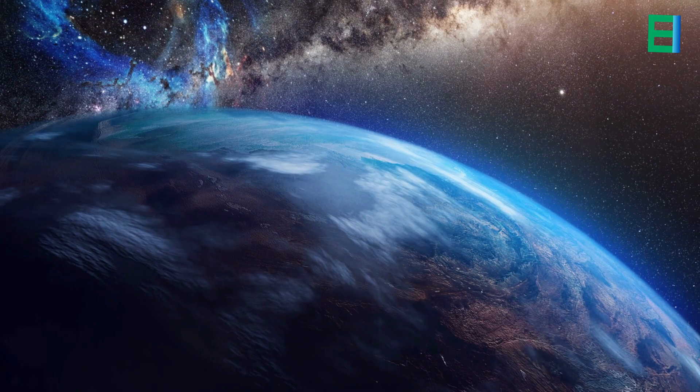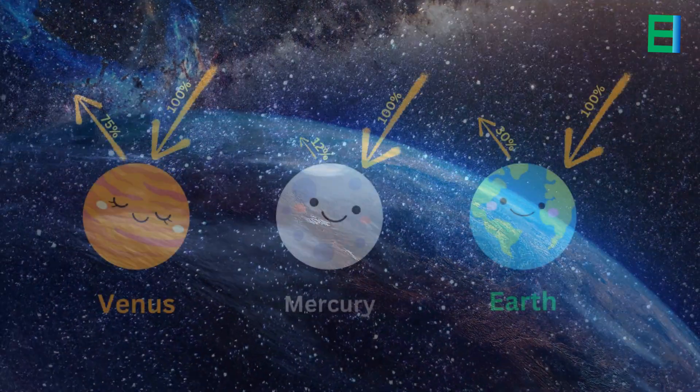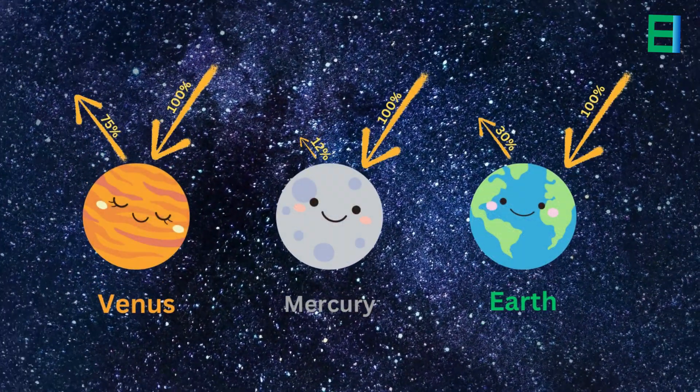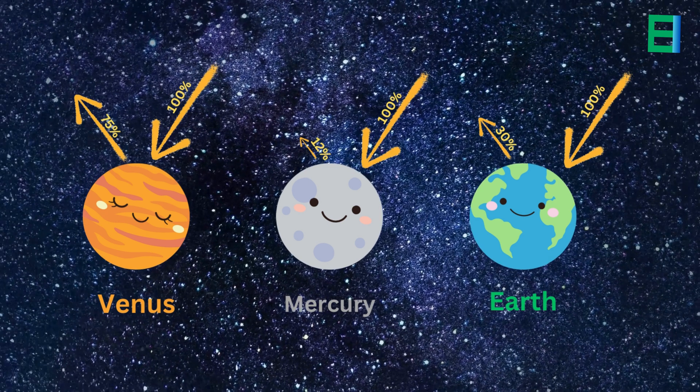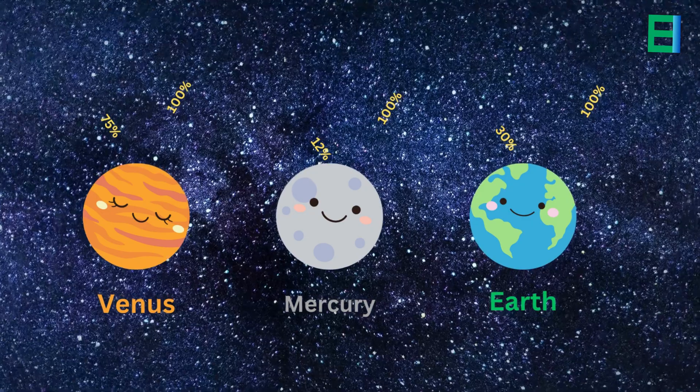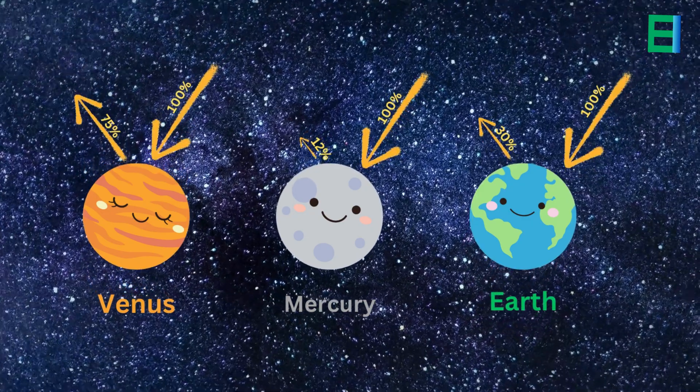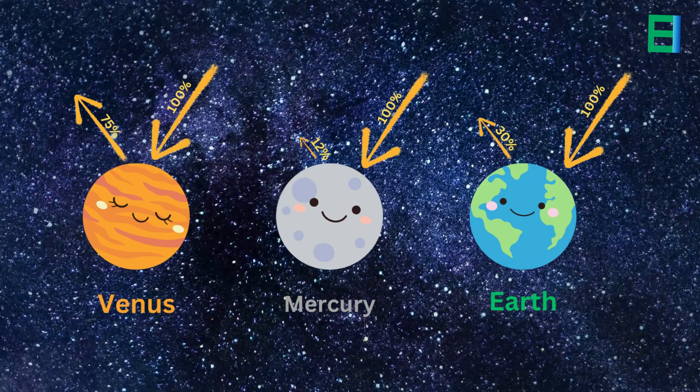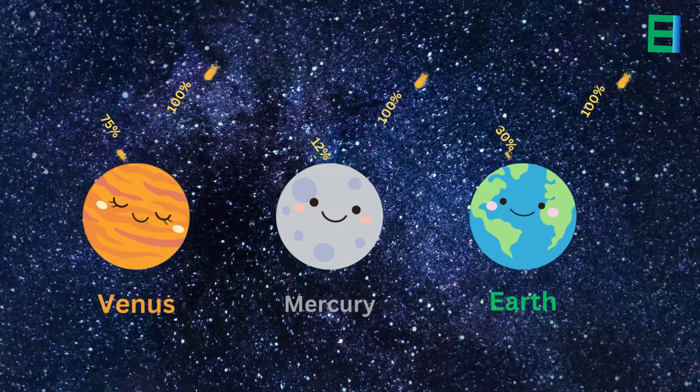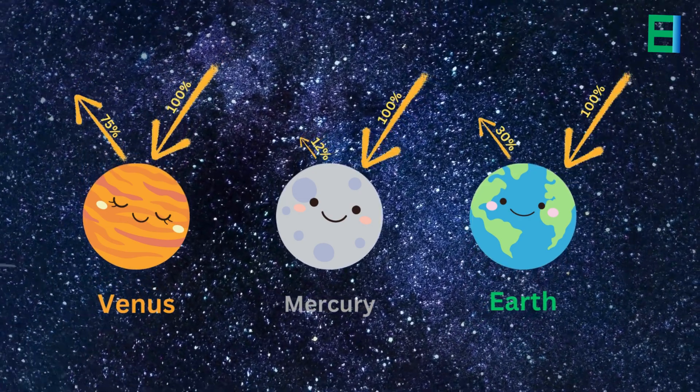In addition, Mercury's surface has a low albedo, meaning it reflects a small portion of the sunlight that reaches it. Instead, most of the sun's energy is absorbed by the planet's surface, which contributes to its extreme temperatures. The absorbed energy heats up the surface but does not incinerate the planet itself.